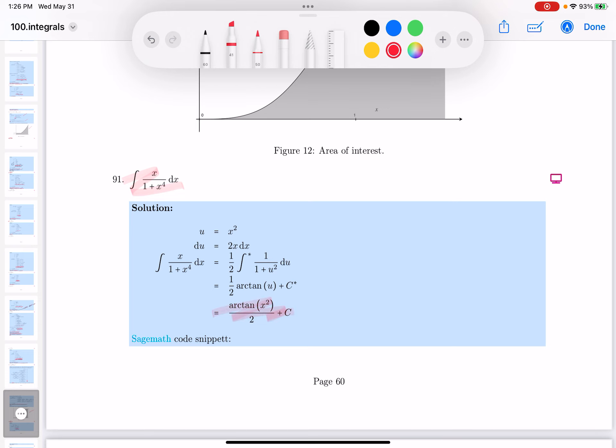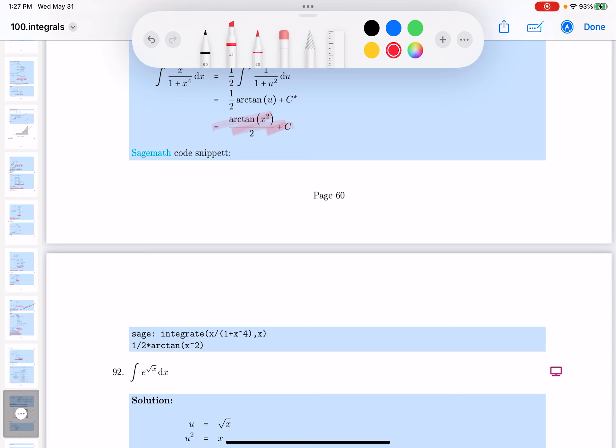So for 91, when I went through the work, we did paper and pencil, we got this answer over here. Then my concern is over here, I wonder what Sage got. And Sage gets the same exact answer, which is encouraging, by the way.